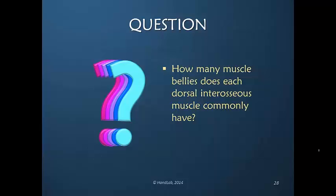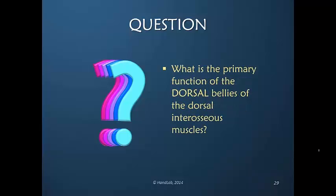If I were to ask you how many bellies each dorsal interosseous muscle commonly has — one, two, or three — the best answer would be two, because indeed usually there are two bellies of the dorsal interosseous muscle that insert in different locations. So what would you say are the primary functions of the dorsal bellies of the dorsal interosseous muscles?